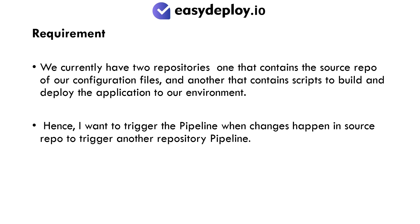Requirement: We currently have two repositories — one that contains the source repo of our configuration files, and another that contains scripts to build and deploy the application to our environment. Hence, I want to trigger the pipeline when changes happen in the source repo to trigger another repository's pipeline.